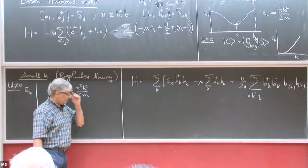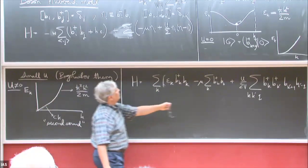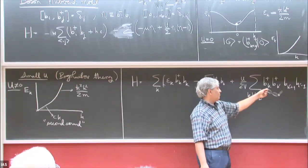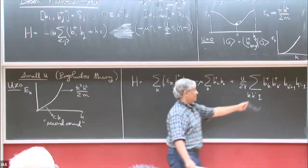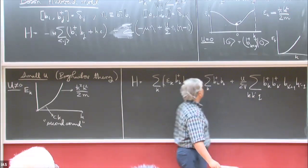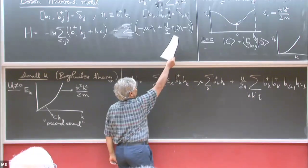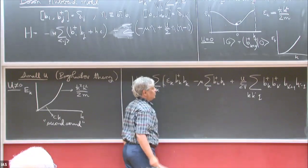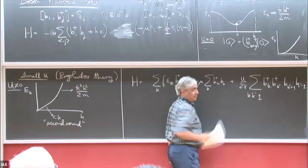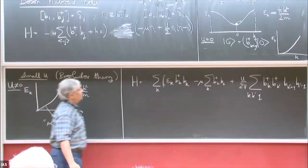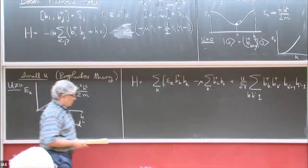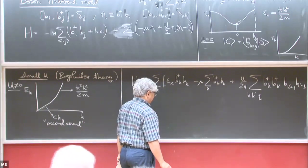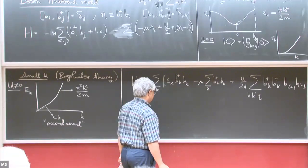One thing you'll notice right away is that this interaction expression is what we call normal order, where all the creation operators are to the left of the annihilation operators. But when you normal-order the other term, the minus one is just what you need to give you exactly this expression. So we now first want to put everything in the zero-momentum state.